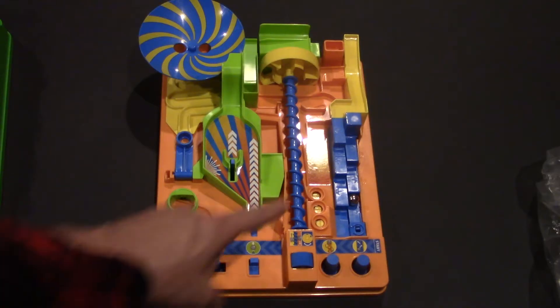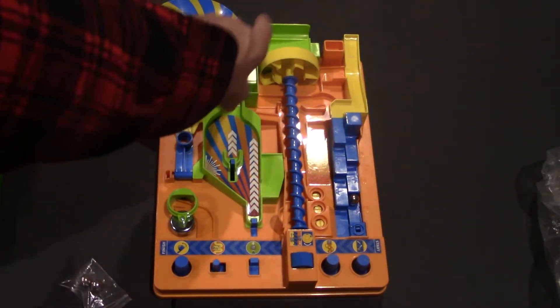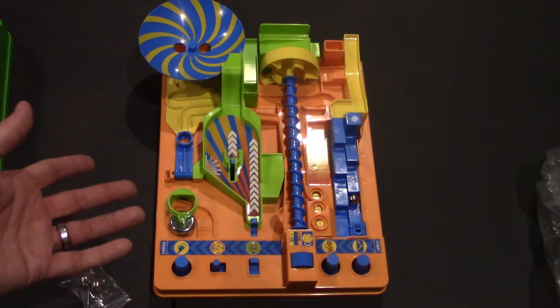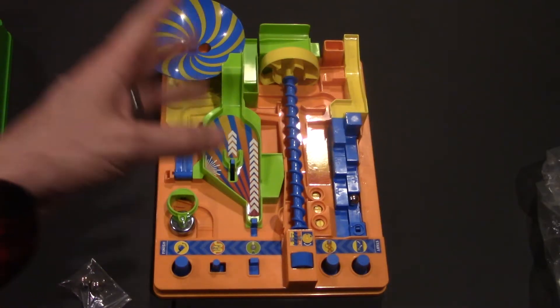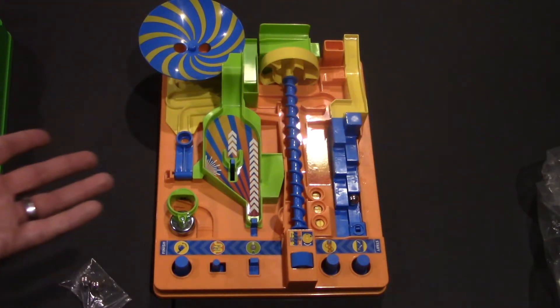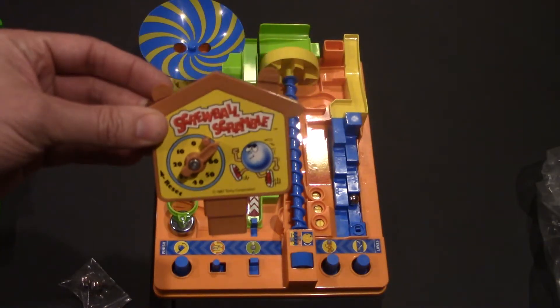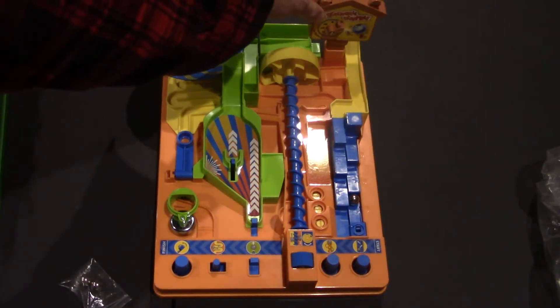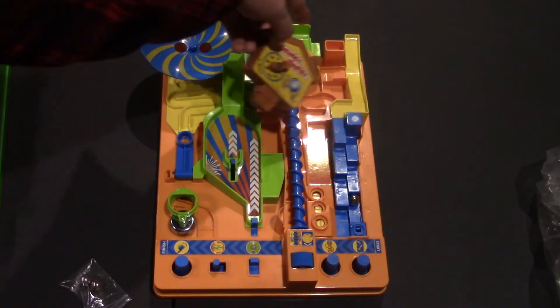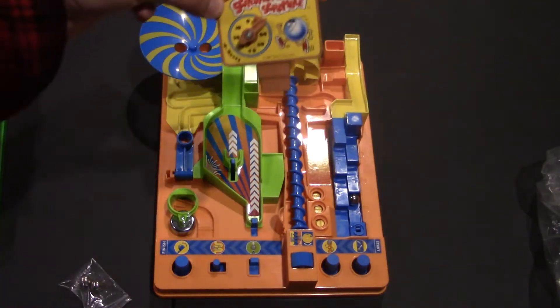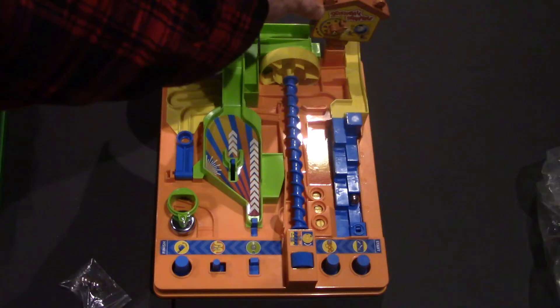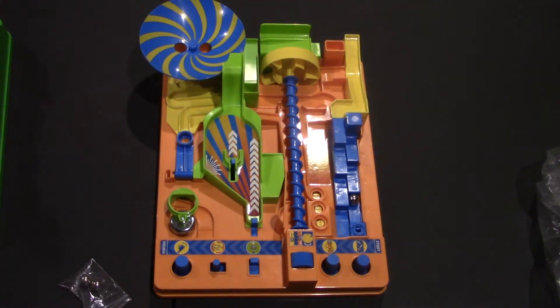So just like the original Screwball Scramble, you're going through all these little challenges here. In each individual challenge, you're trying to do it within the time limit of one minute. Now, you have the timer from the old game. You can stick it in right in here. I have an old version of the game, so it doesn't fit in the new version, but I'm guessing new versions of Screwball Scramble would fit with this one. It doesn't matter, and I'll tell you why in just a second.